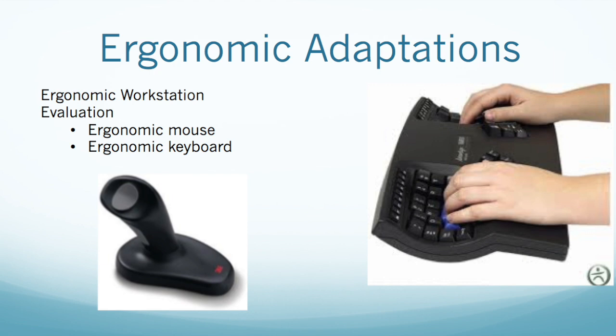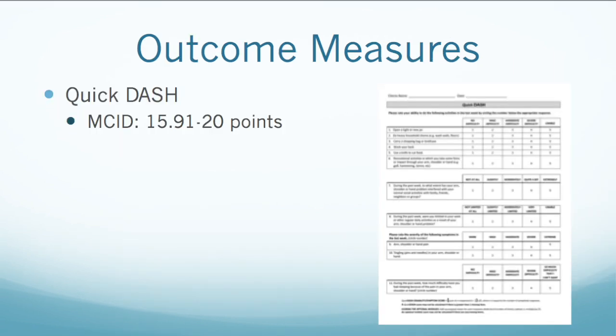For example, an ergonomic mouse is designed to keep the wrist in a more neutral alignment, and an ergonomic keyboard was designed to reduce excessive stress on the muscles in the hand and forearm. A common outcome measure used in upper extremity conditions is the QuickDASH. This is a shortened version of the DASH, which has 30 items instead of 11. This outcome measure is appropriate for patients with radial nerve entrapment because it looks at the patient's symptoms as well as their perception of ability to perform functional tasks. The QuickDASH is scored from 0 to 100, with 100 equating to greater disability.